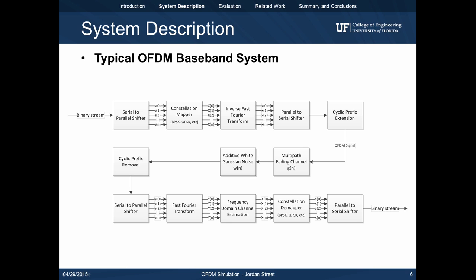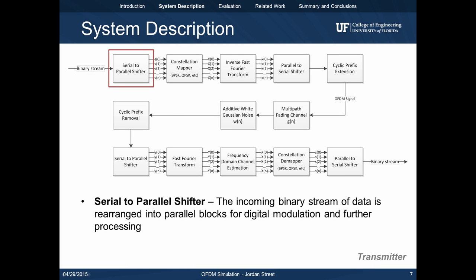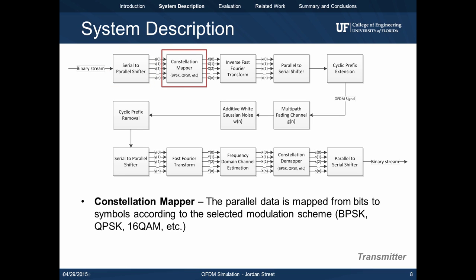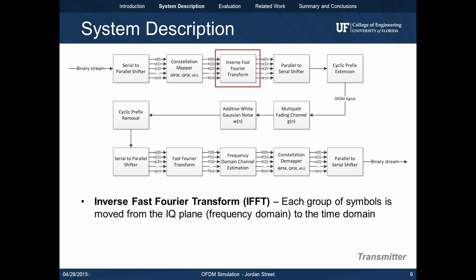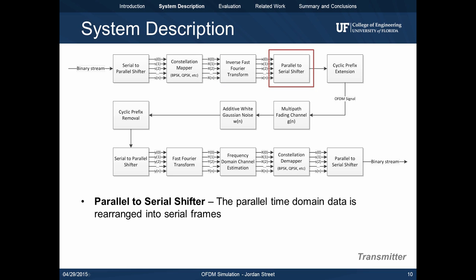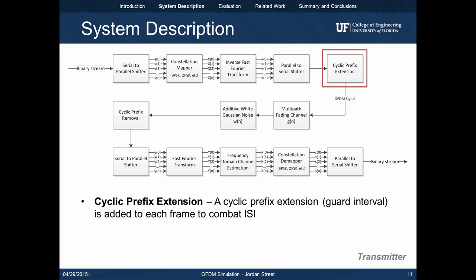Displayed here is the baseband block diagram for a typical OFDM system. A binary stream of data is first shifted into parallel blocks. These parallel blocks are then mapped to symbols according to the selected modulation scheme. Examples include BPSK, QPSK, 16QAM, etc. The inverse fast Fourier transform is used to move the data to the time domain. Once in the time domain, the signal is shifted from parallel blocks to a serial data stream. A cyclic prefix extension is added to combat inter-symbol interference.